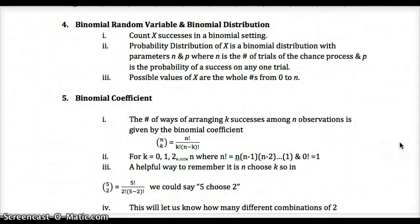We count x successes in a binomial setting. The probability distribution of x has parameters n (number of trials) and p (probability of success on any one trial). The possible values of x are whole numbers from 0 to n — meaning zero successes up to a maximum of n successes if every trial is a success.